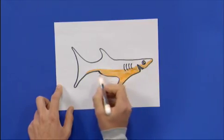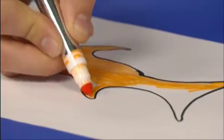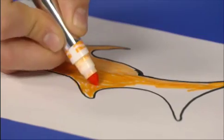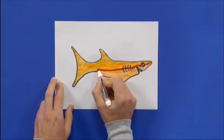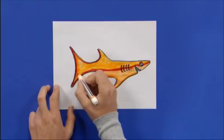I colored the bottom of my shark peach and then the top of my shark orange with markers. I added some details with red marker and did some hatching and cross hatching.